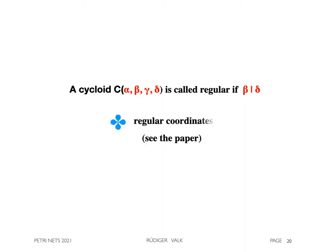The structure of regular processes generate corresponding coordinates, which are called regular coordinates. They make investigation easier for such cycloids.